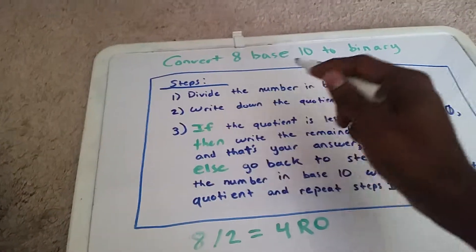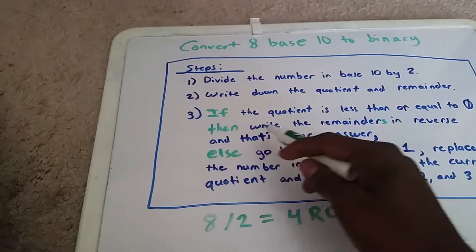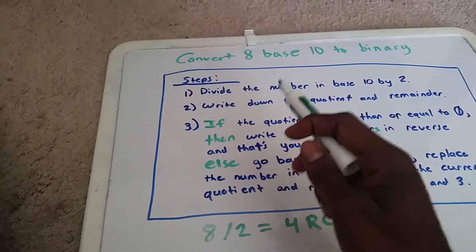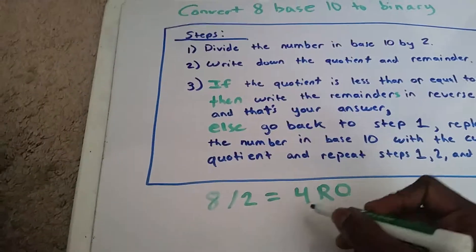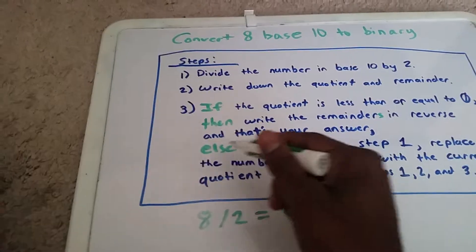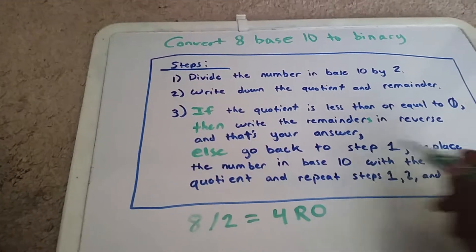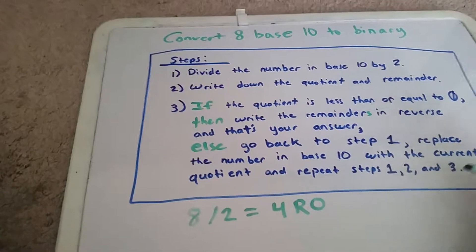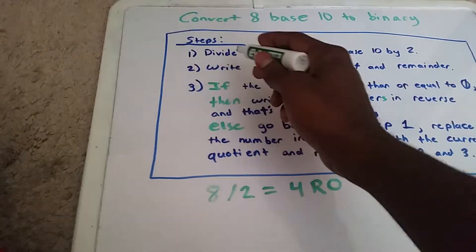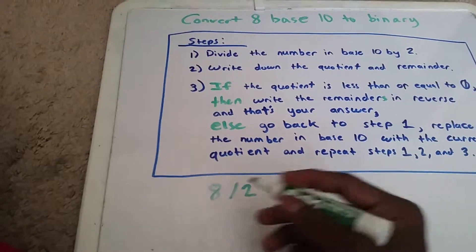Now we go to step 3. If the quotient is less than or equal to 0, we write down the remainders in reverse order. But it's not — our quotient is 4, and 4 is greater than 0. So we go to the else statement: go back to step 1, replace the number in base 10 with the current quotient, which is 4, and repeat steps 1, 2, and 3.